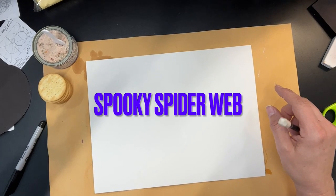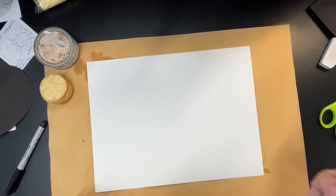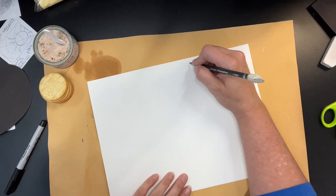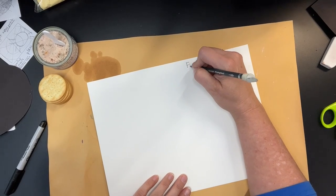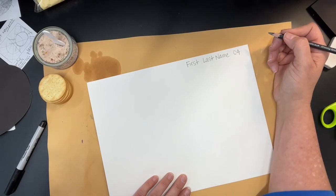This is a spider web made with rubber cement resist and watercolor. You have to put your name on the back first because it's going to be wet and sticky. Don't forget your class number. I'd like you to also add your table color.